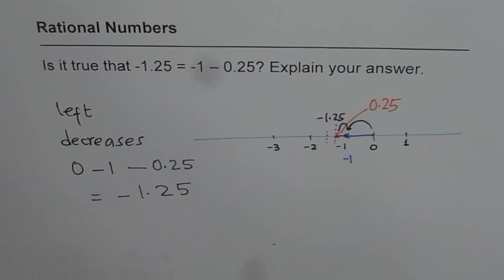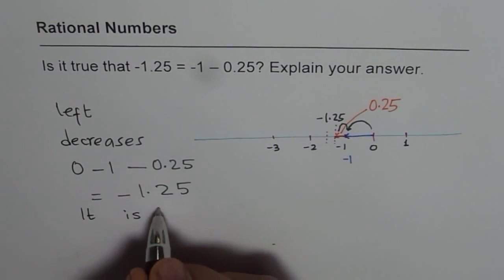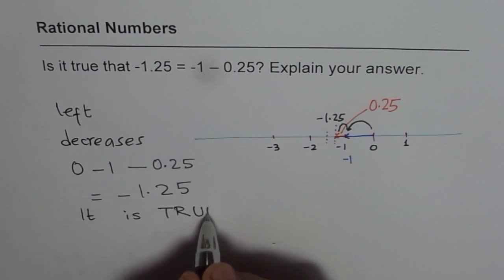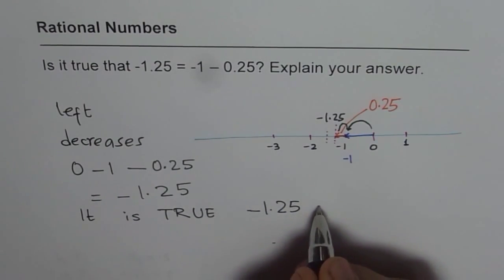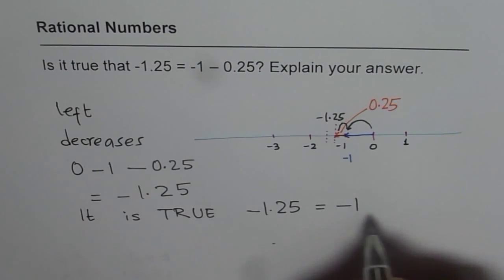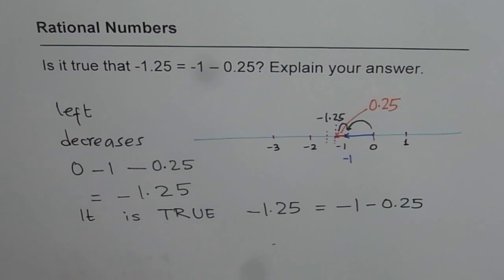So it is true. The answer is yes, it is true. -1.25 is indeed equal to -1 - 0.25. Thank you.